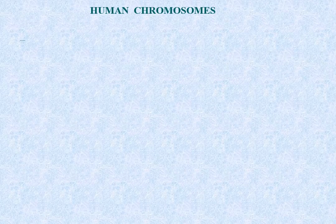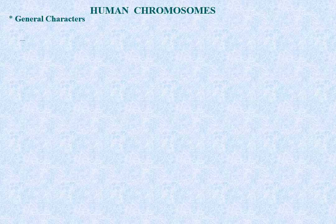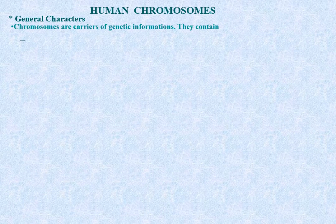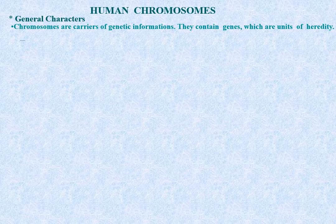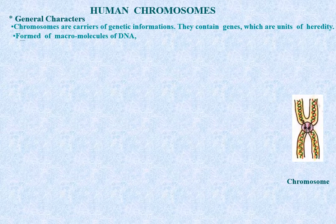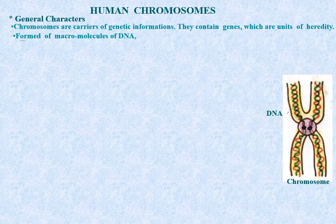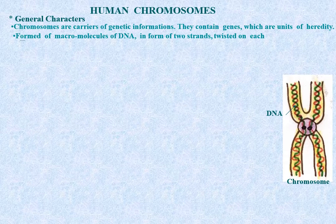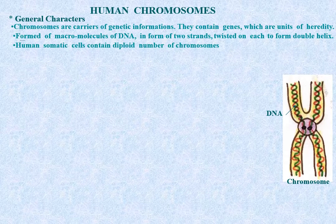Human chromosomes - general characters: Chromosomes are the carriers of genetic information, as they contain the genes which are the units of heredity. Chromosomes are formed of macromolecules of DNA in the form of two strands twisted on each other to form a double helix. Human somatic cells contain the diploid number of chromosomes, that is 46 chromosomes.